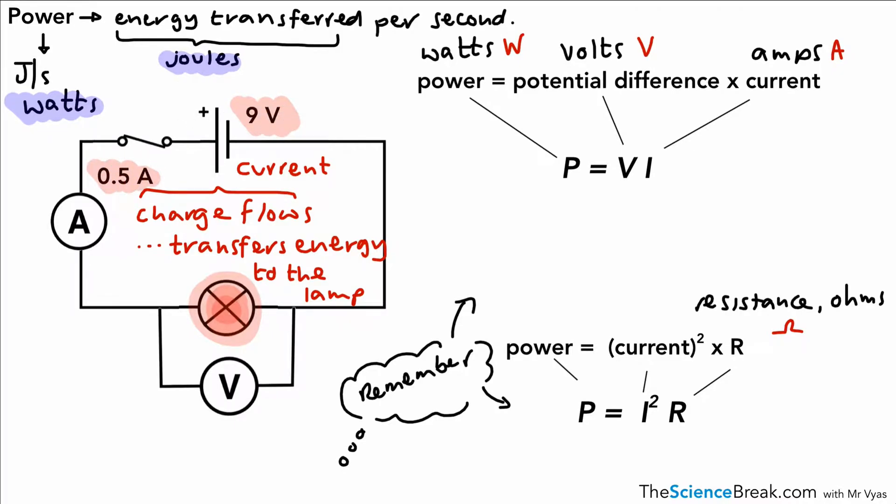So imagine we had a current of 0.5 amps and a potential difference of 9 volts. We could simply work out the power transferred to the lamp by 9 times 0.5. And the answer to that would be 4.5. And as we said, the unit is in watts.